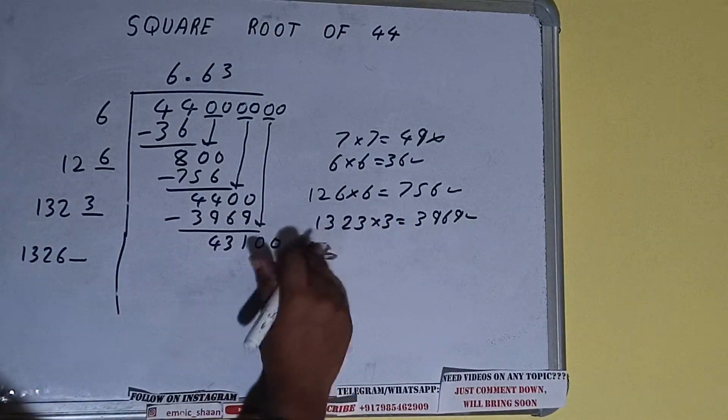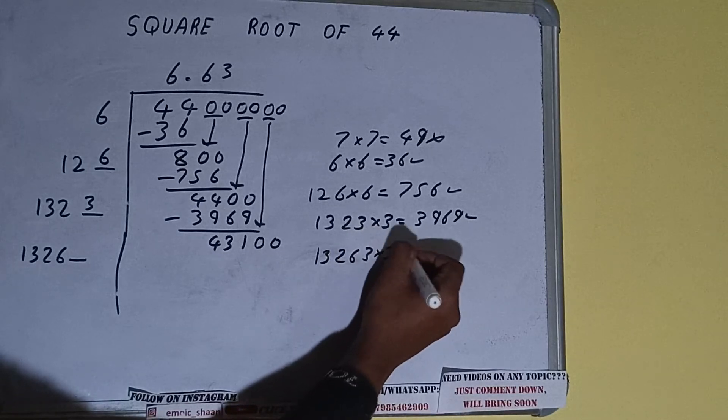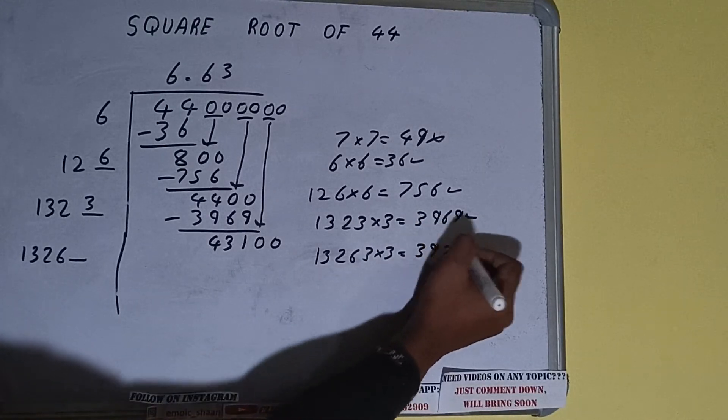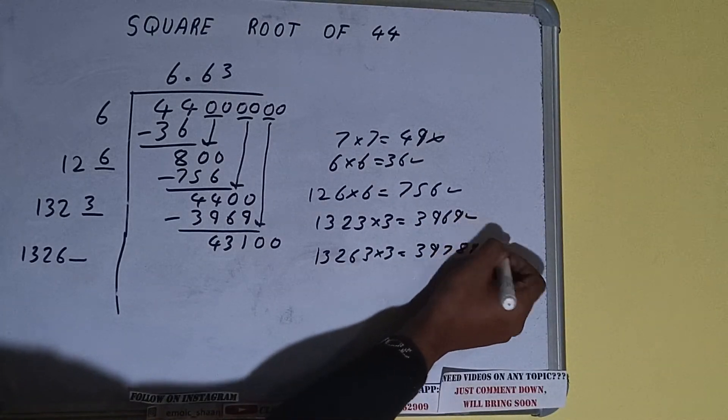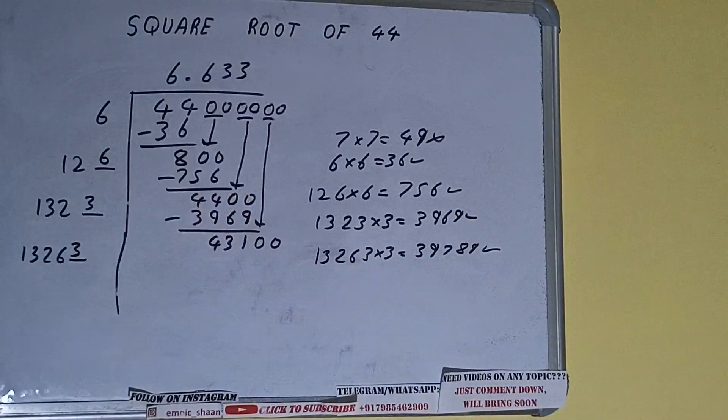13263 into 3 we can try. It will be 39789 which is good to take. So we can write 3 here and 3 here, but we don't need to calculate because we got the answer correct up to three decimal places.